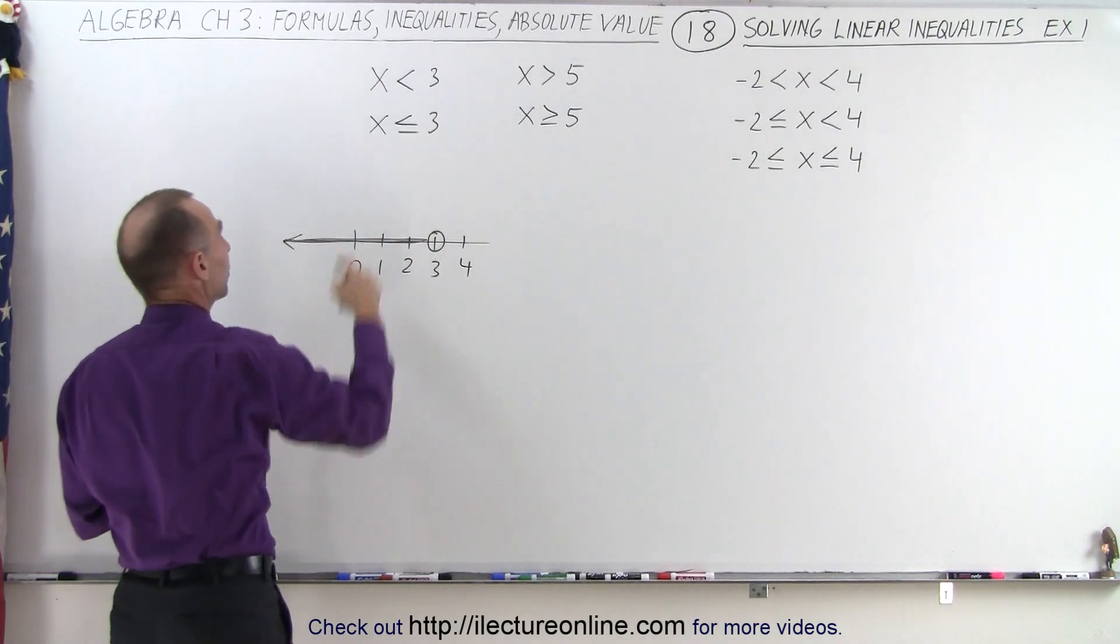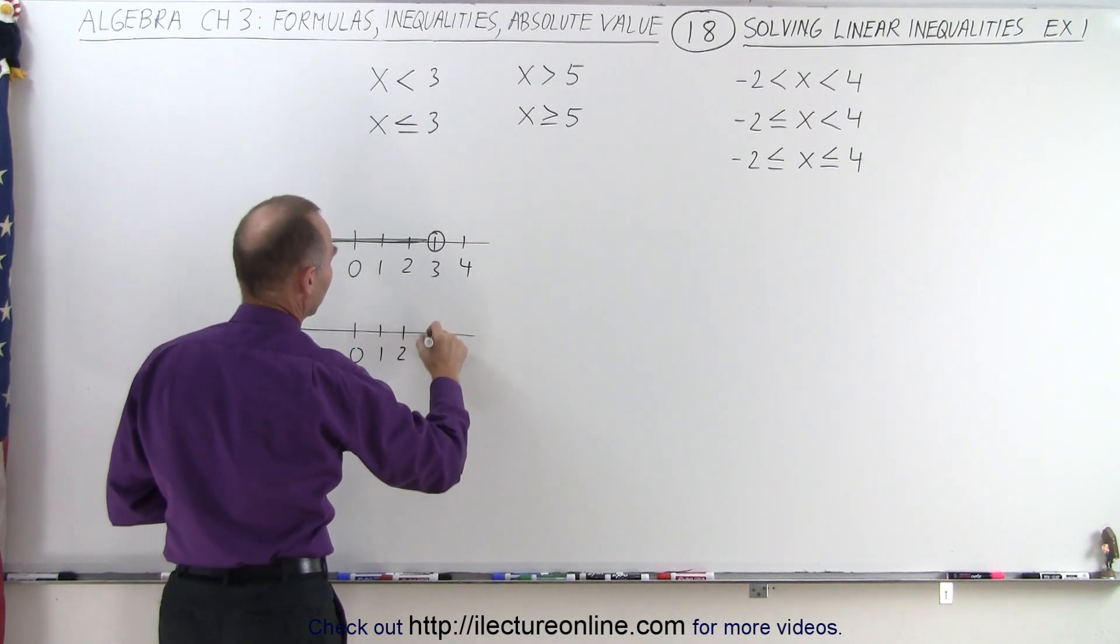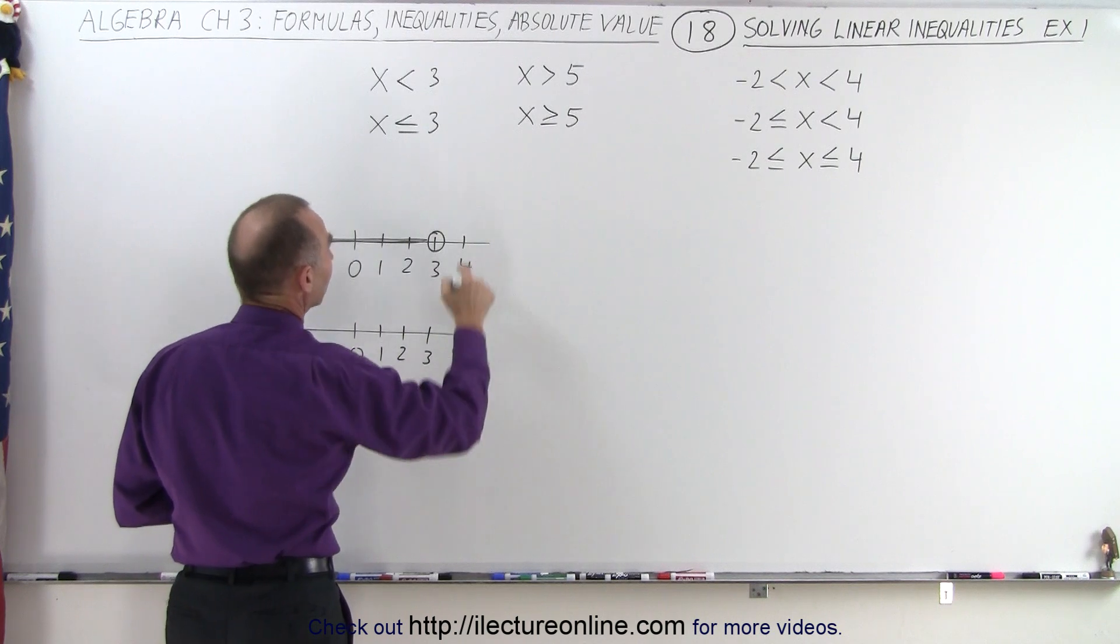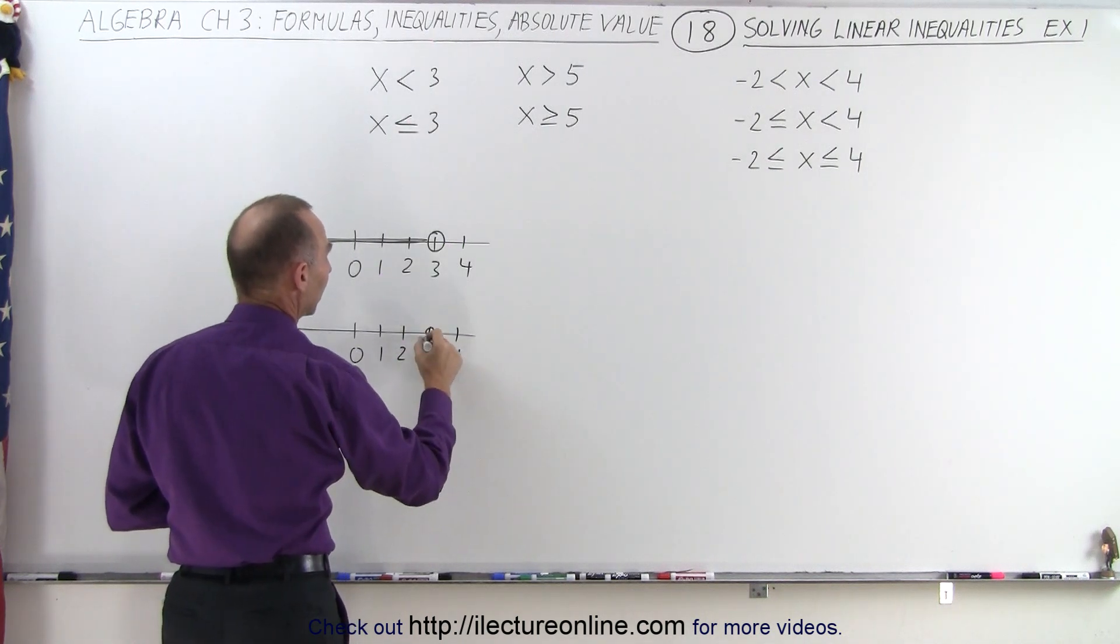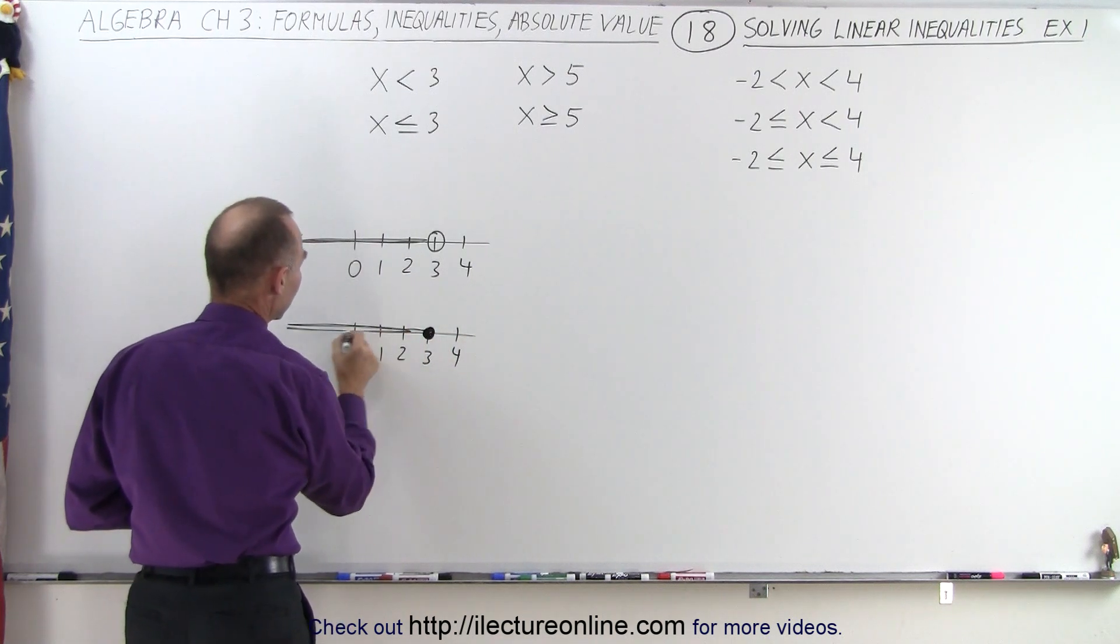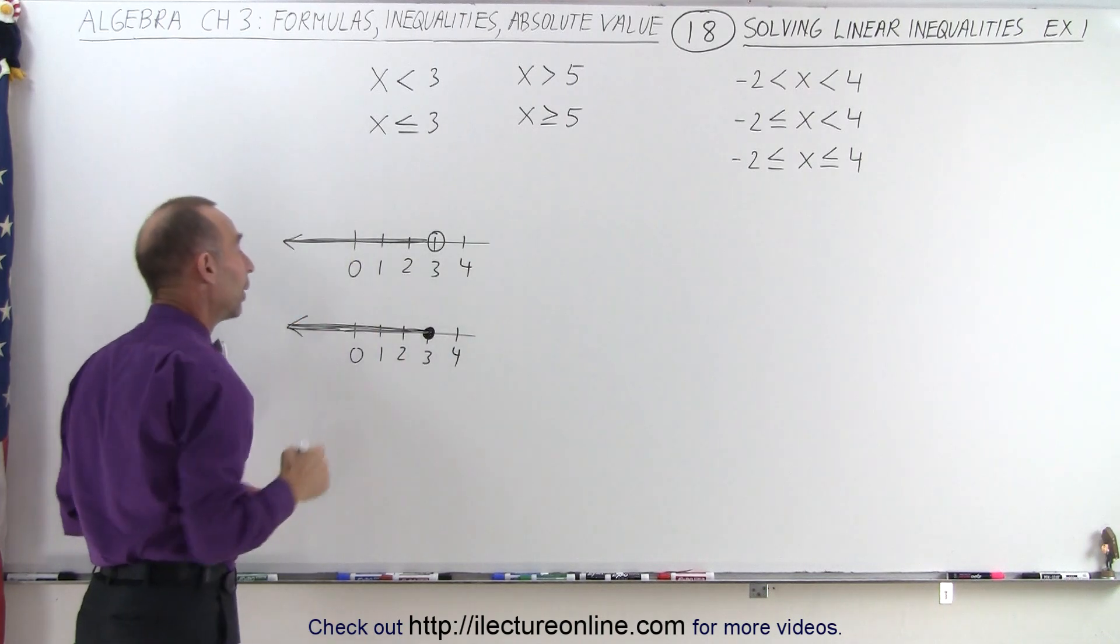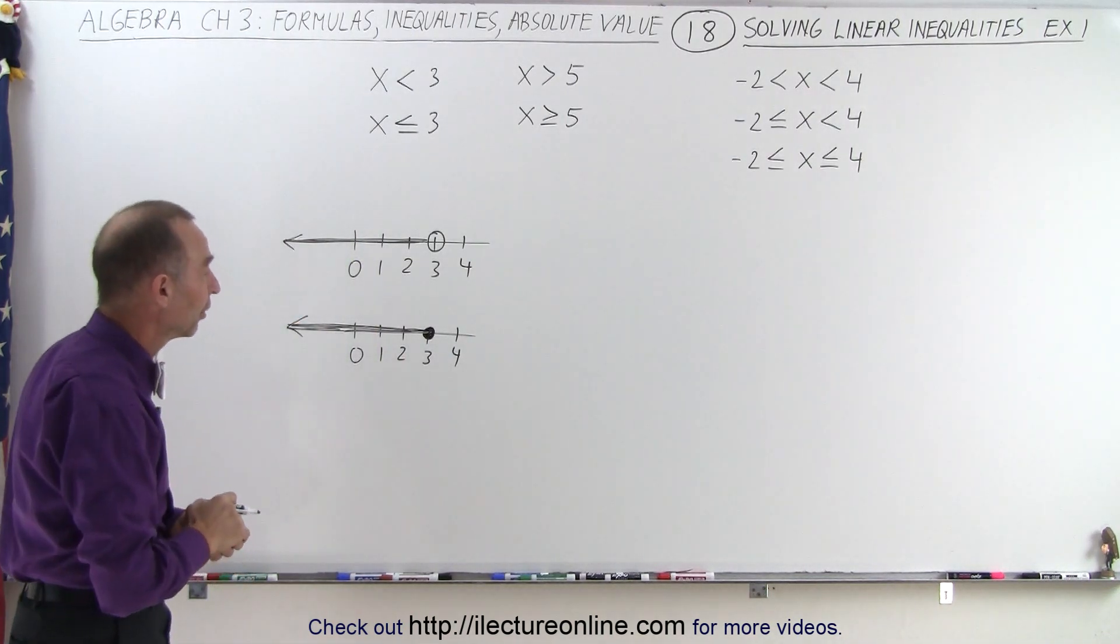But if we're going to include 3, we do the same thing. We draw a number line and indicate the points. We typically pick some points that are near the value of the limit. In this case, we're going to include the number 3, so we make a solid circle, and then we indicate everything to the left of positive 3 satisfies that inequality, including the endpoint 3.